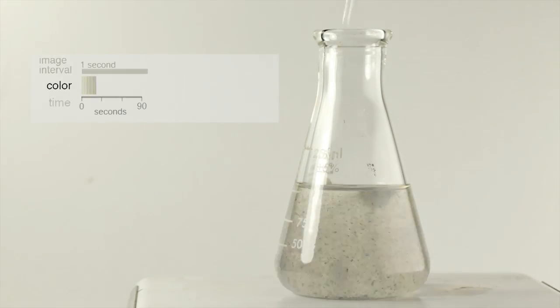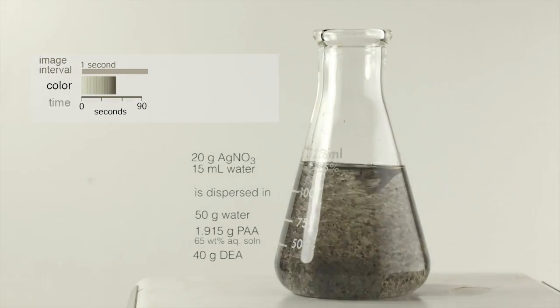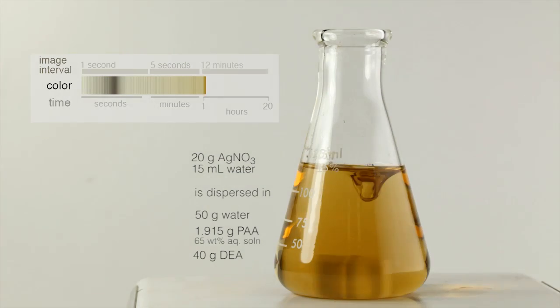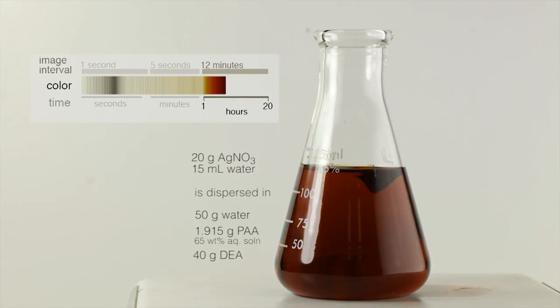First, we disperse an aqueous solution of silver nitrate into a flask of water, polyacrylic acid, and diethanolamine. The silver nitrate quickly dissolves, and over a period of 20 hours, the particles grow to a diameter of 5 nanometers.